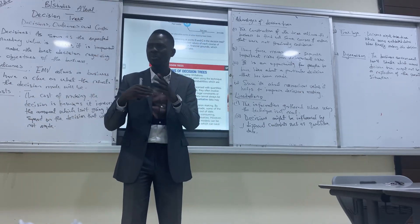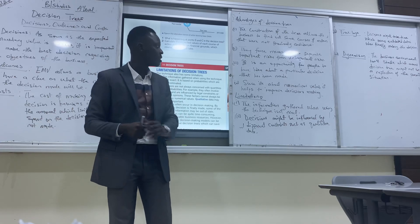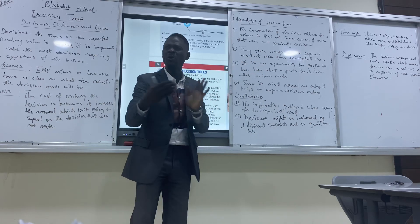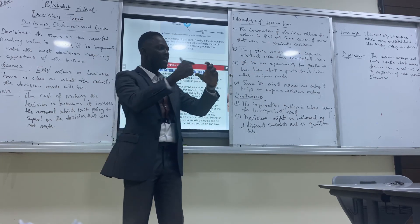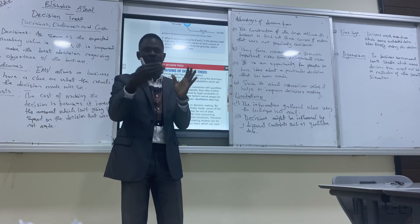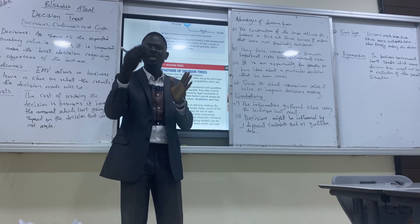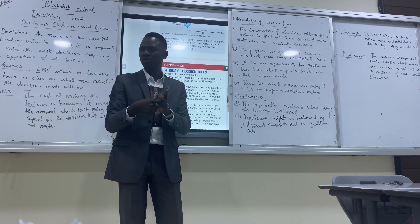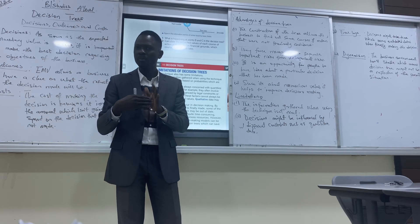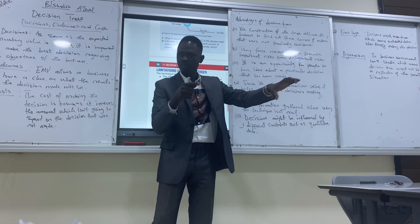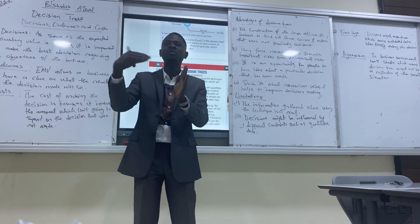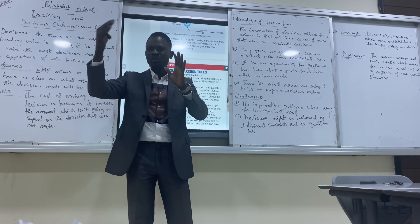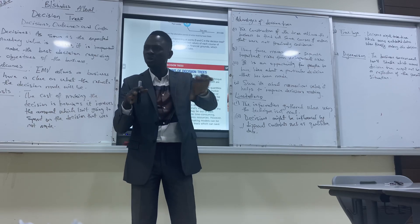Now we go to the advantages or merits or importance of having a decision tree. The first one: the construction of the tree allows the business to find out some courses of action that were not previously known. When you make a decision tree, at the end of it you have an EMV. Some things will come up that you never thought about — the success or the failure. You might not think about them before, but because you are drawing the decision tree, it might allow you to know what the success rate or the failure rate will be.